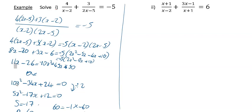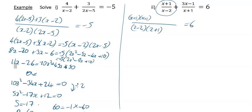Again, take a common denominator. Your common denominator this time is going to be x minus 2 upon x plus 1, still equal to 6 on the right hand side. This term needed to be multiplied by x plus 1, so the top line also gets multiplied by x plus 1, giving x plus 1 upon x plus 1. For the other term, the bottom line needed to be multiplied by x minus 2, so the top line also gets multiplied by x minus 2, giving plus 3x minus 1 upon x minus 2.